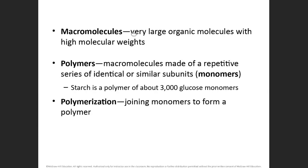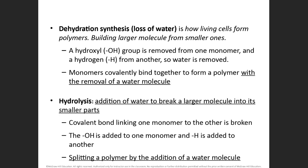Macromolecules — the prefix 'macro' means large, so we're dealing with large organic molecules that have high molecular weights. Polymers are macromolecules made of a lot of similar subunits; we call those subunits monomers. For example, glycogen is a polymer that we can break down into individual glucose monomers. Polymerization is simply when monomers join together.